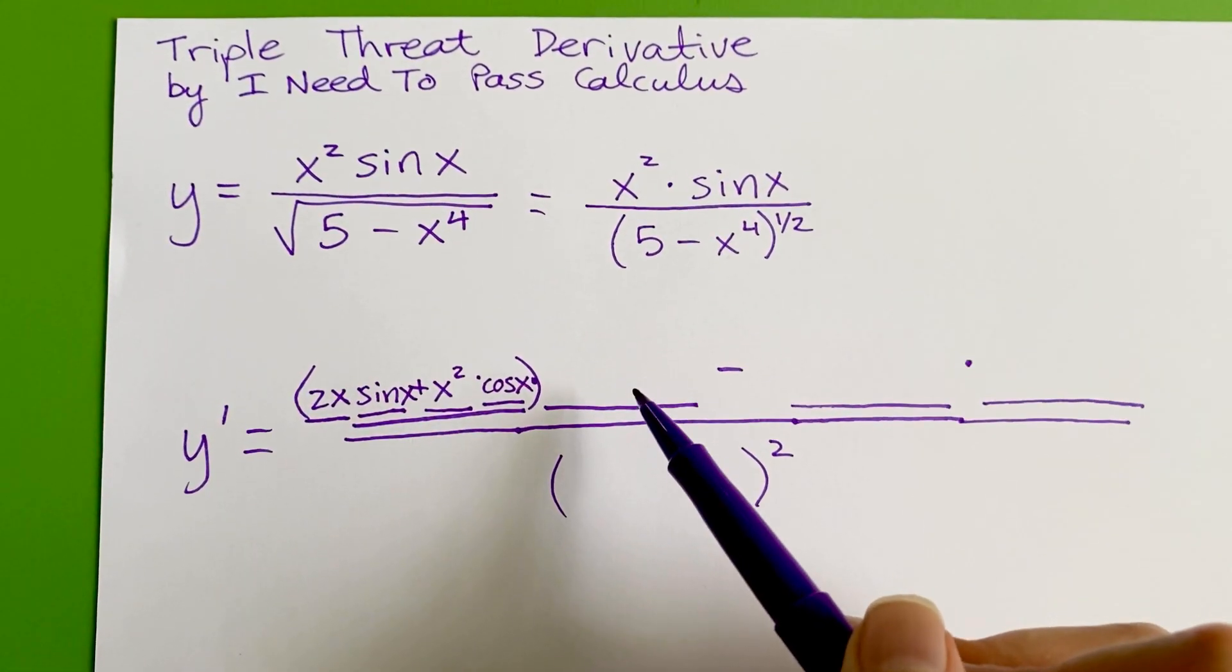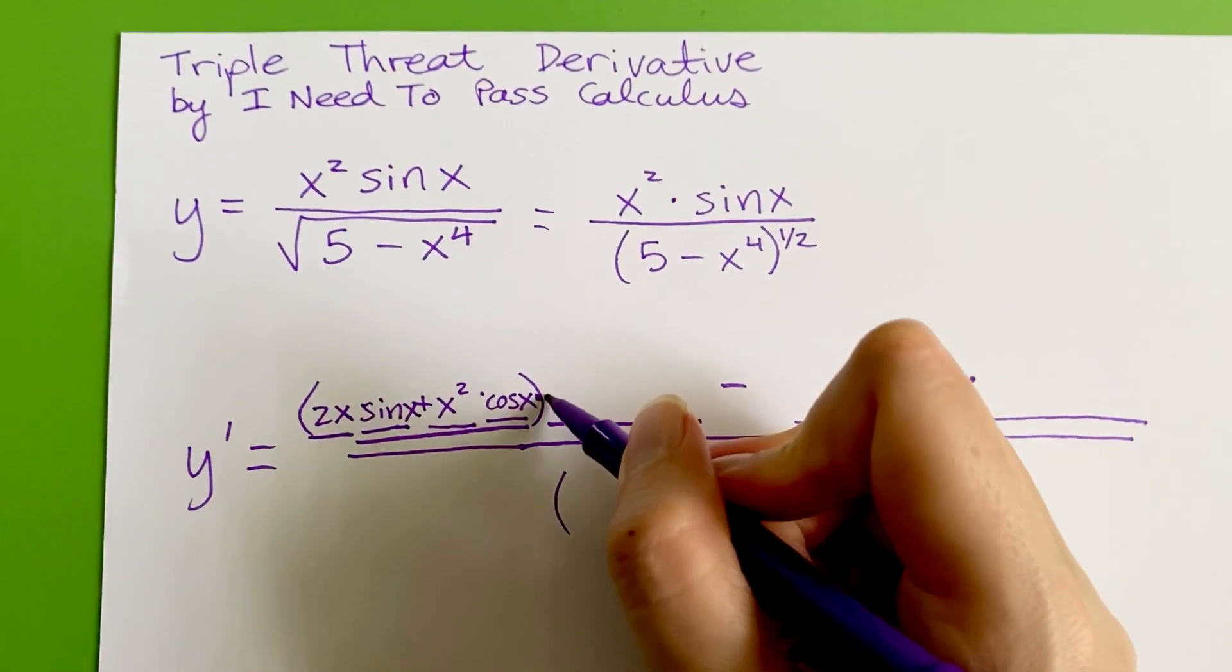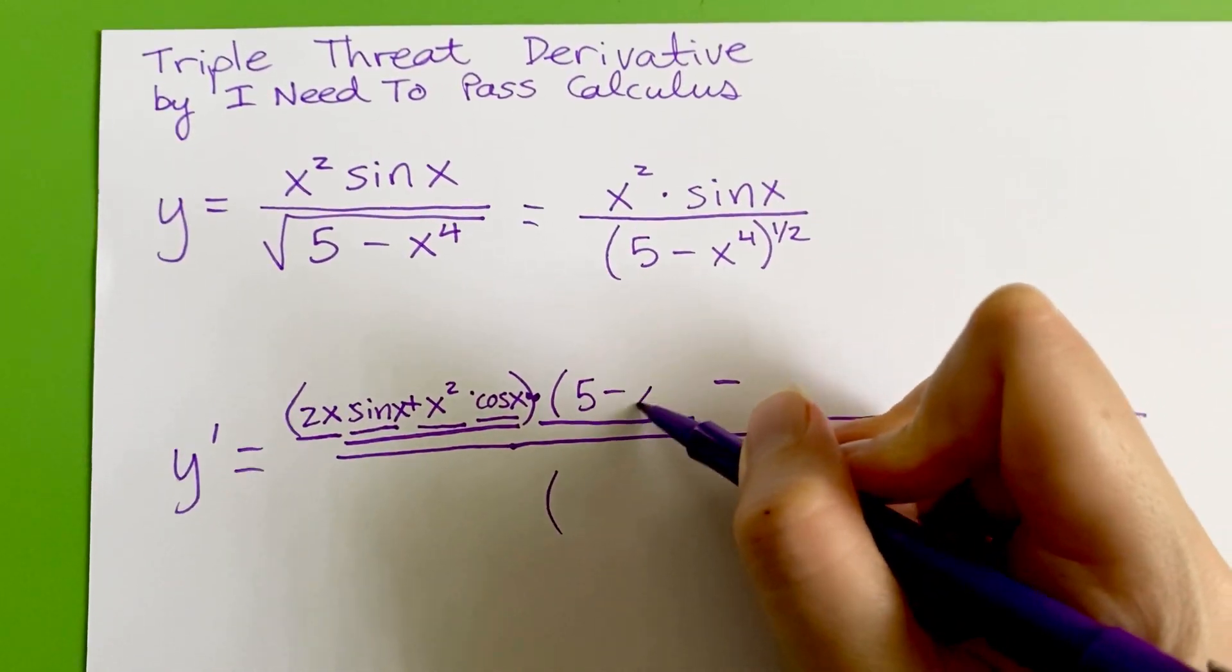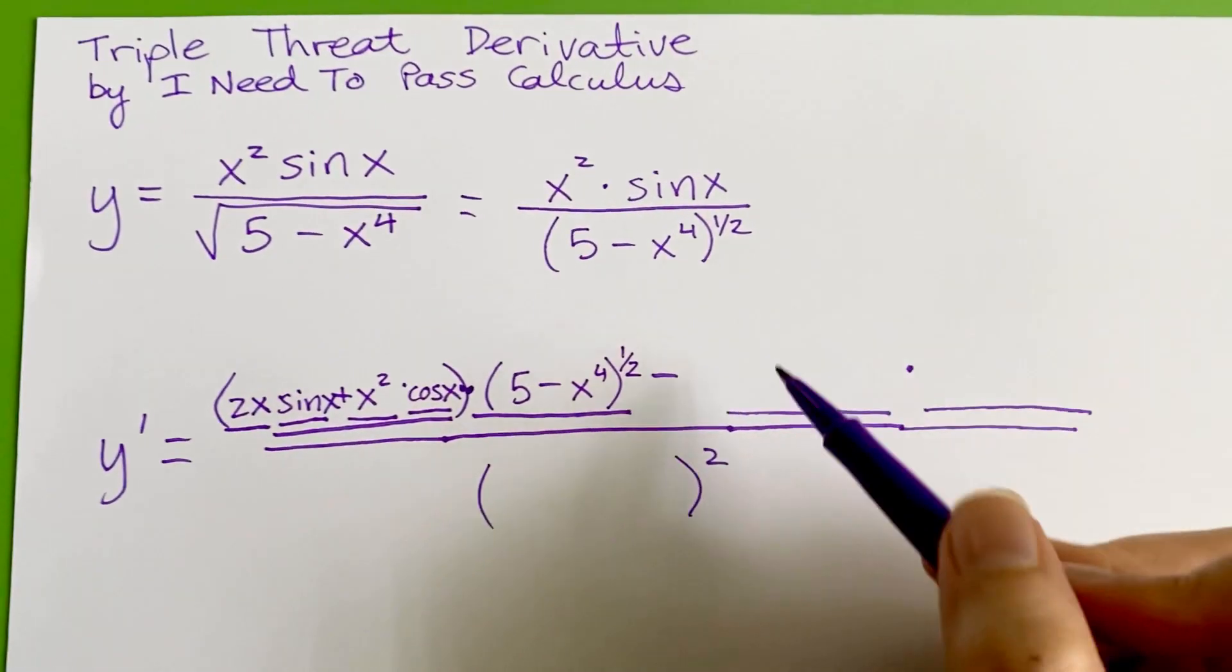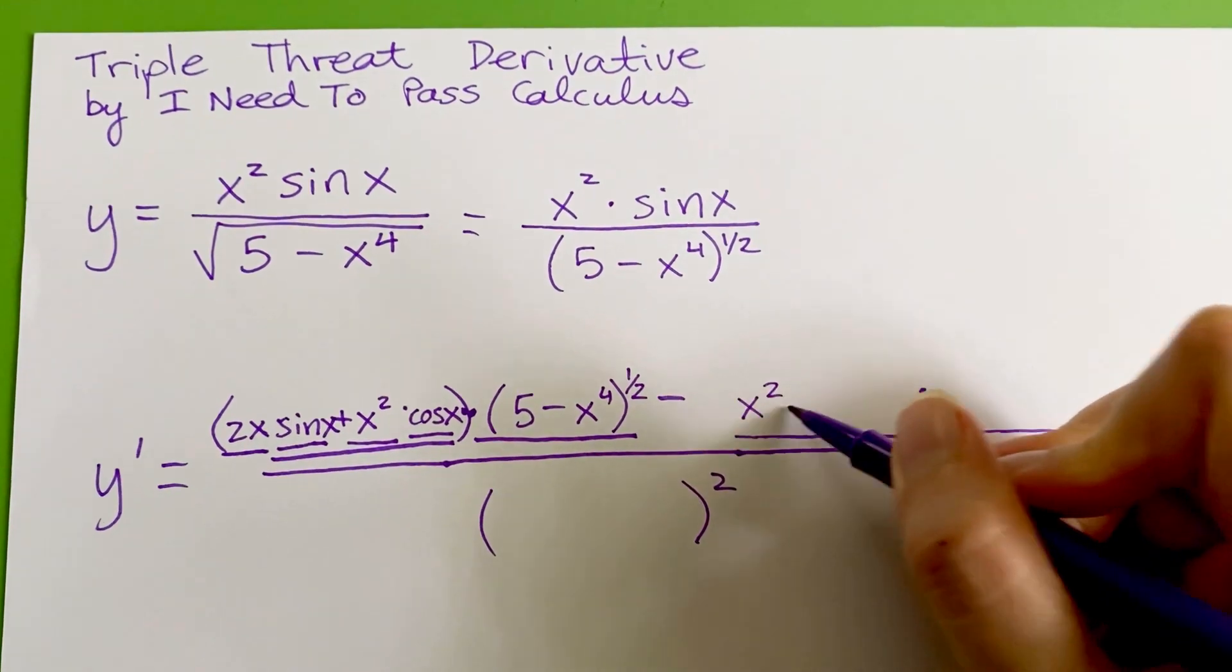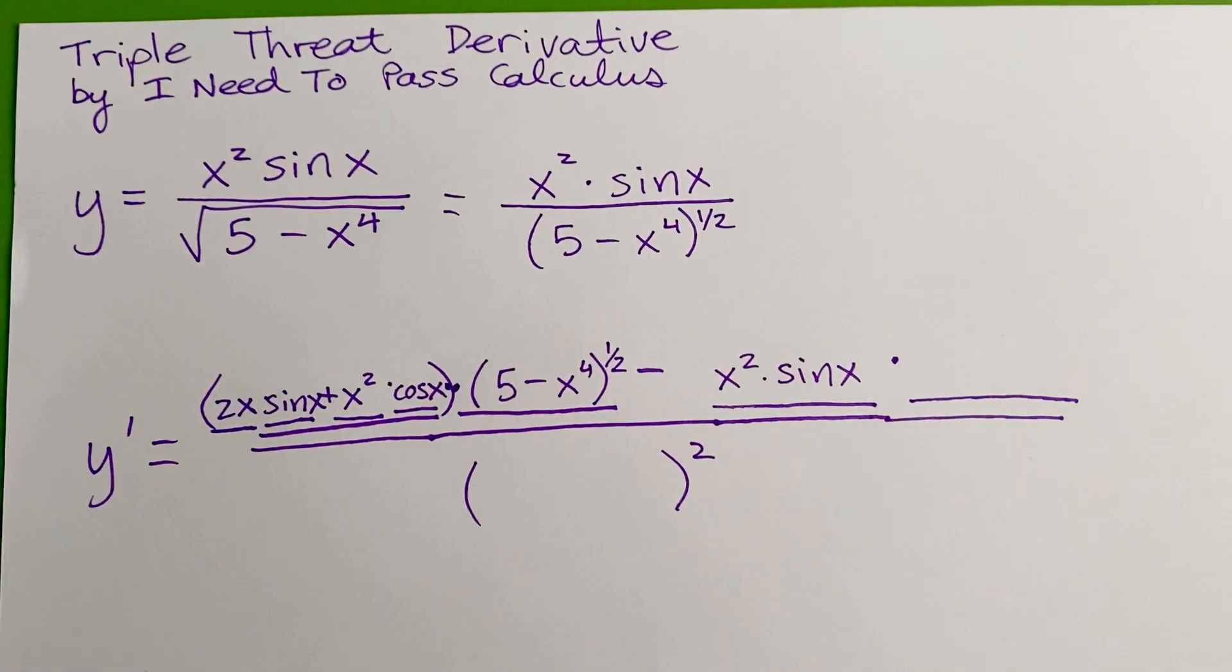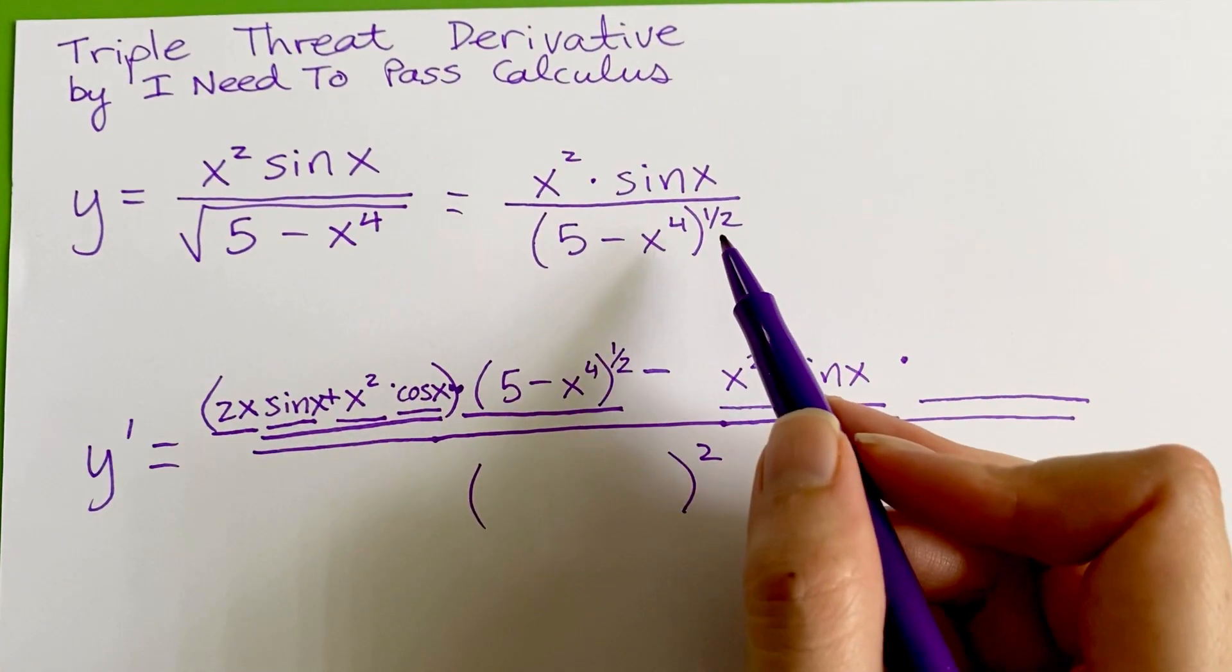The second part in the quotient rule is going to be the bottom part unchanged. So we have the bottom function just copy and pasted in here. And the third blank is going to be the top function unchanged. So x squared times sine x, copy and pasted right in there. And now this last blank is going to be the bottom function's derivative.